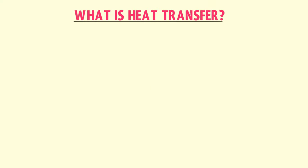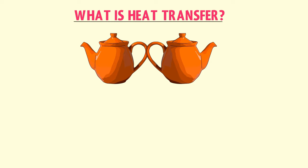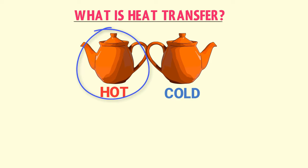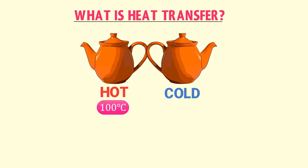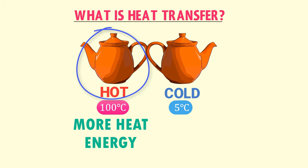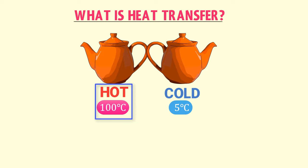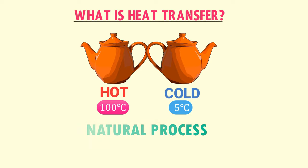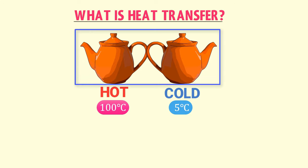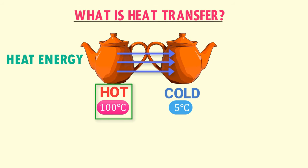Now, what is heat transfer and temperature? Let's consider two objects. This object is hot and this object is cold. The temperature of the hot object is 100 degrees centigrade and the temperature of the cold object is 5 degrees centigrade. The hot object possesses more heat energy than the cold object, which is why its temperature is higher. A natural process of transferring heat energy or thermal energy occurs between these two objects.